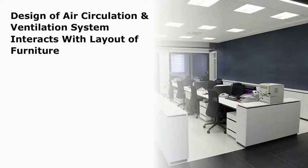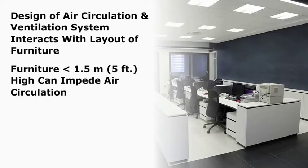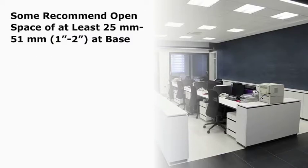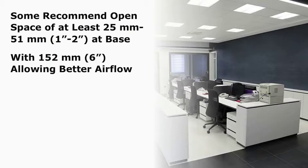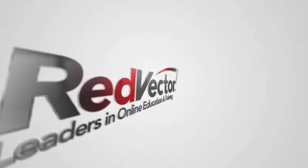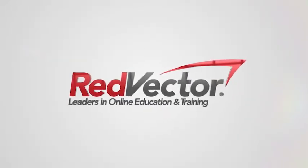The design of the air circulation and ventilation system interacts with the layout of the furniture. Even furniture like filing cabinets and acoustic screens less than 1.5 meters or 5 feet high can impede air circulation, especially if they extend to the floor. Some sources recommend an open space of at least 25 to 51 millimeters or 1 to 2 inches at the base, with 152 millimeters or 6 inches allowing even better airflow. If walls or full-height partitions enclose spaces, each enclosed space should have one supply vent and one return or exhaust vent.